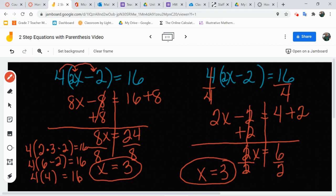That leaves me with 1x equals 6 divided by 2 is 3. So both ways, we got x equals 3. We already proved that it is correct.